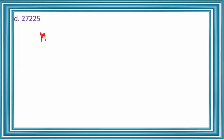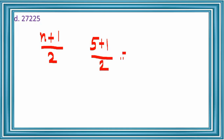Next number, 27,225, is also a perfect square. How many digits are there? 1, 2, 3, 4, 5 — so 5 digits. We use (n+1)/2. n is 5, so (5+1)/2 = 6/2 = 3. The square root of 27,225 has 3 digits. You can find the square root of 27,225 and count — you will definitely get 3 digits.